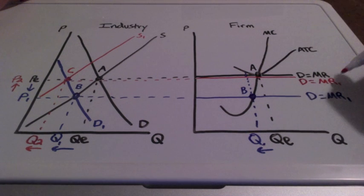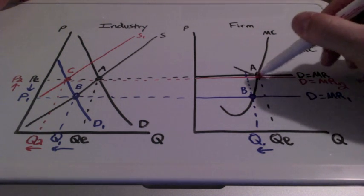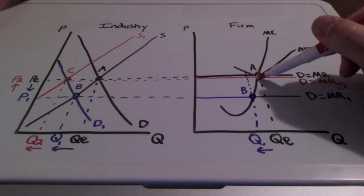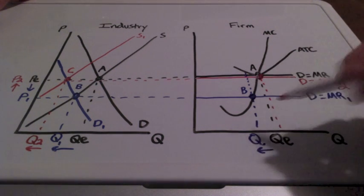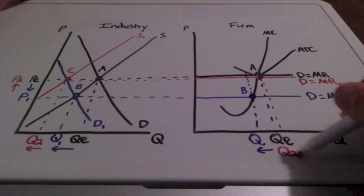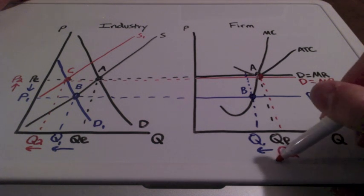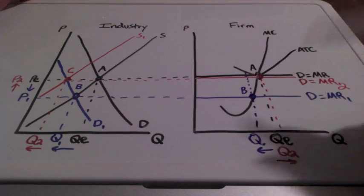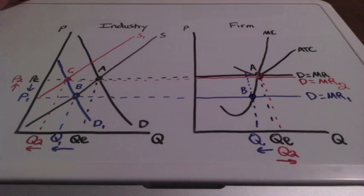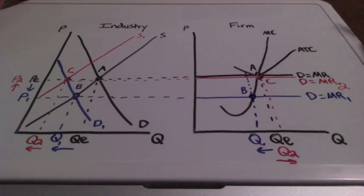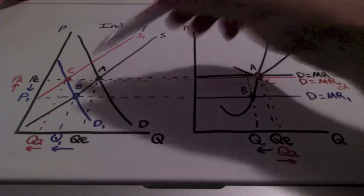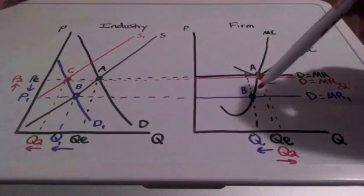We find our intersection where marginal revenue equals marginal cost and bring this down. We are moving back to long run equilibrium. So we started at A, went down to B, and then back up to point C — returning to long run equilibrium.